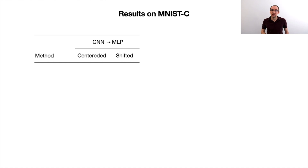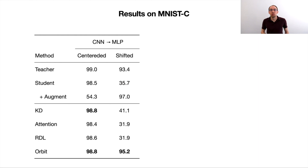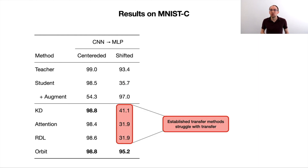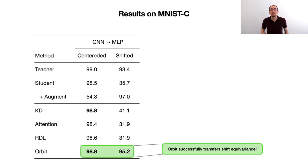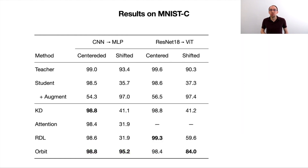To scale this to a more realistic setting, we transfer from a CNN to an MLP on standard MNIST training data and evaluate on centered and shifted images. The results clearly show that the MLP student on its own has no shift equivariance. The finding from 1D MNIST is confirmed, as established transfer methods struggle to capture the equivariance. Our ORBIT method, on the other hand, successfully transfers the shift equivariance, which can also be seen in the group representations learned in the process. Similar results are also observed when transferring from a ResNet teacher to a Vision Transformer student.